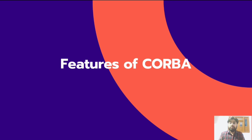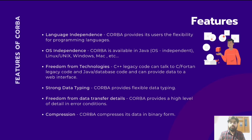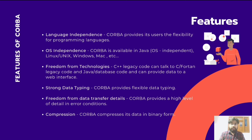Now let's discuss the features of CORBA. First is language independence — currently many languages are supported by various CORBA providers, the most popular being Java and C++, along with C, Smalltalk, and Perl. Second is operating system independence — CORBA is meant to be OS independent. It is available in Java, which is a platform independent programming language, so CORBA also supports multiple operating systems like Linux, Unix, Windows, Mac, etc.